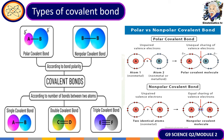In a polar covalent bond, there is an unequal sharing of valence electrons — although they share, the sharing is not equal. In a non-polar covalent bond, both atoms share their valence electrons equally. Covalent bonds are also categorized by the number of shared electron pairs: one pair is a single bond (single line), two pairs is a double bond (two lines), and three pairs is a triple covalent bond.